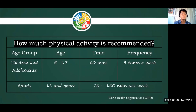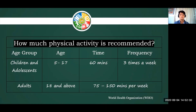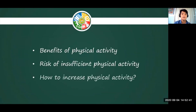Here is a table containing a standard on the amount of physical activity we need to perform depending on our age. For example, if you belong to the age range of 5 to 17, you need to perform 60 minutes of physical activity three times a week. For adults, there is a different requirement shown in the table. For the next slide, we will be talking about the benefits of physical activity, the risk of insufficient physical activity, and how to increase physical activity.